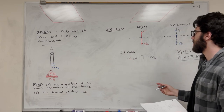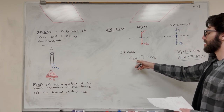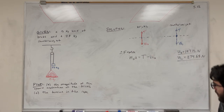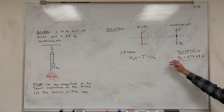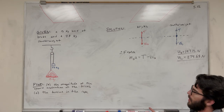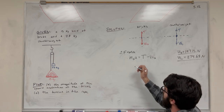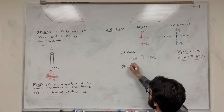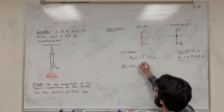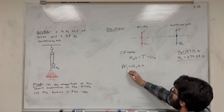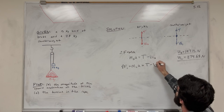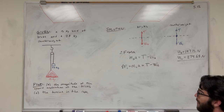We know the weight of the bricks but not tension or acceleration — two unknowns in one equation, so we can't solve yet. For the counterweight, the sum of forces equals mass of the counterweight times the acceleration of the system, and the equation becomes: tension minus the weight of the counterweight.